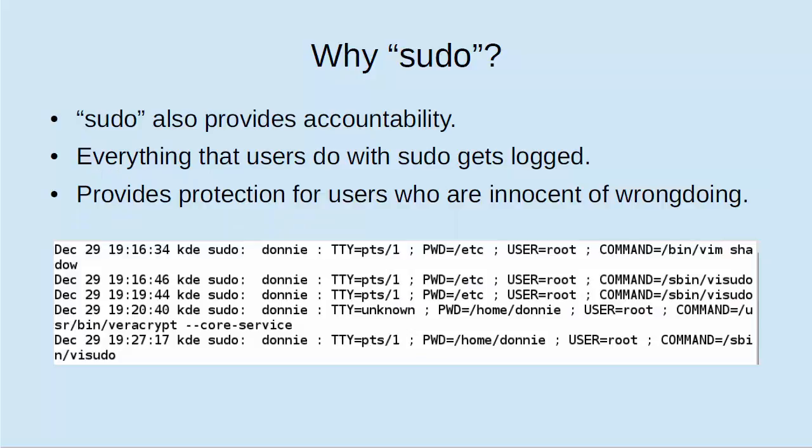Sudo also provides accountability, meaning that everything that users do with sudo will get logged. You can see in the screenshot of our secure log file how user Donnie logged in with just his normal user account, and you can see all the things done with sudo privileges. That works both ways — it's a good way to verify if somebody is doing something wrong, and it can be used for criminal prosecution or as grounds for disciplining a person. But it can also provide protection for users who are completely innocent of any wrongdoing, so if something happens and you know that you did not do it, you would be able to prove that with the log files.